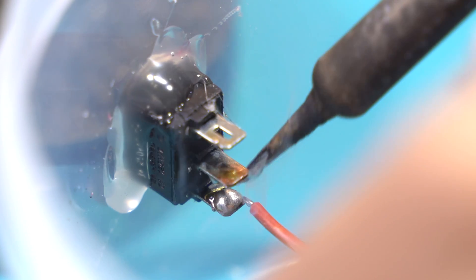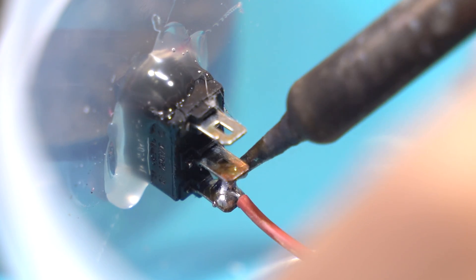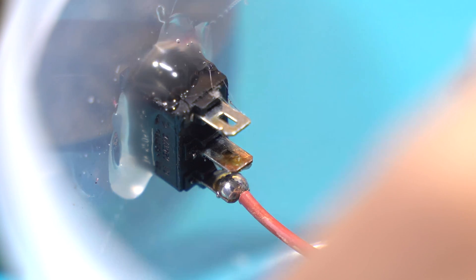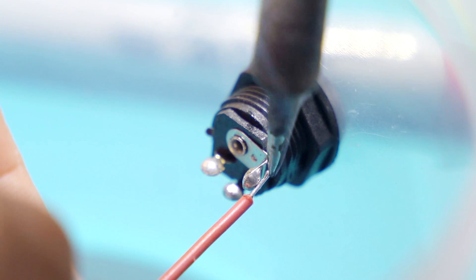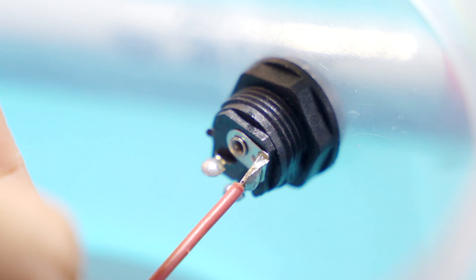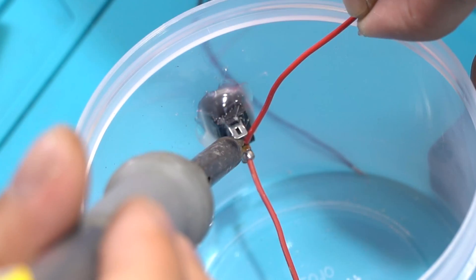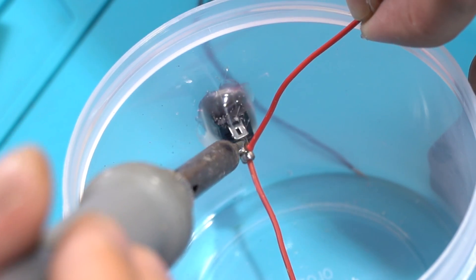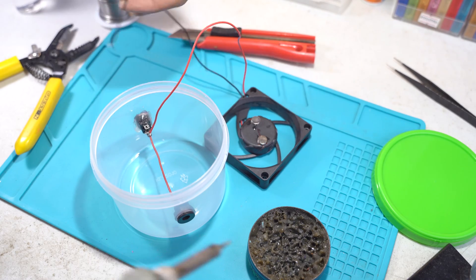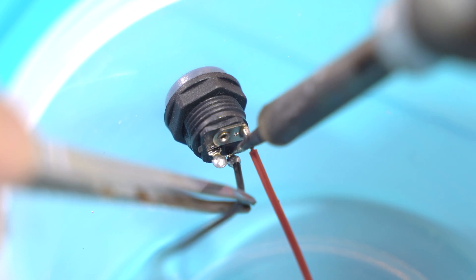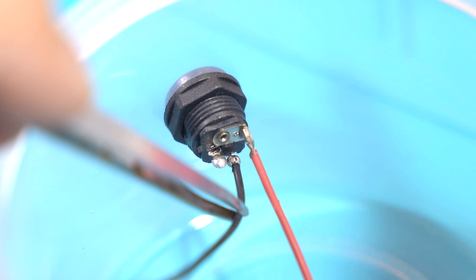As for the wiring, I connected the switch, the DC jack, and the fan in series. I started by soldering the lower pin of my switch to the positive end of my DC jack. Then I soldered the positive wire of my cooling fan to the middle pin of my switch. As for the negative wire of my cooling fan, I then soldered it to the negative end of my DC jack.